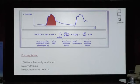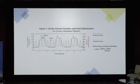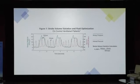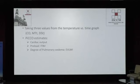Pulse contour analysis has prerequisites: the patient must be 100% mechanically ventilated with no spontaneous breathing, tidal volume should be 6 to 8 ml/kg, and no arrhythmias are allowed while calculating PICO. Pulse contour analysis also provides stroke volume variation (SVV) and pulse pressure variation (PPV). Arterial pressure changes with respiration — SVV equals stroke volume maximum minus minimum divided by mean. SVV should be less than 10%; if more than 10%, the patient is hemodynamically unstable or hypovolemic.